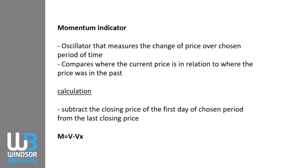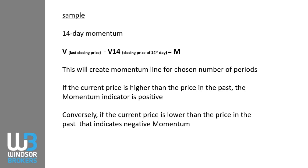The momentum indicator is an oscillator that measures the change of price over a chosen period of time, comparing where the current price is relative to where it was in the past. The calculation: we take the chosen period, then subtract the closing price of the first day. The formula is M = V minus V14, where V is the last closing price and V14 is the closing price of the first day of the 14-day period. This creates the momentum line.